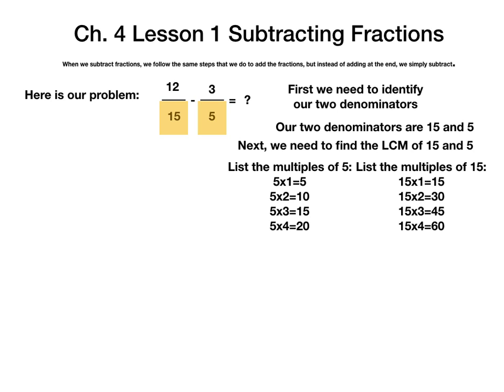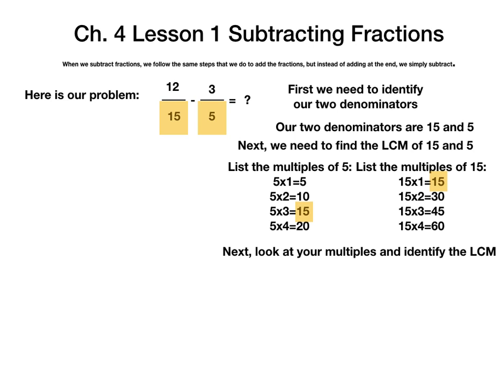Now, identify the least common multiple that 5 and 15 share. They share the number 15. I know that might confuse you because 15 is already a denominator. So, you have to multiply your fractions so that they have denominators of 15.